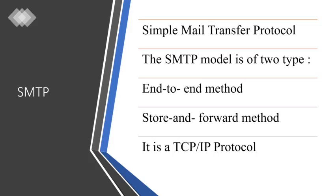To send a mail, a system must have a client MTA, and to receive a mail, a system must have a server MTA. SMTP transfers messages from the client MTA to the server MTA. SMTP uses commands and responses to transfer the message between the MTA client and MTA server.